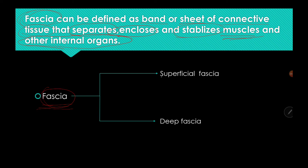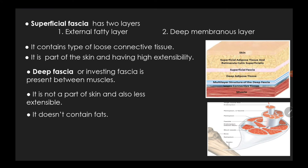For the fascia of the upper limb, the first type is superficial fascia, located on the superficial surface of the body, and the second is deep fascia, the deepest part of the body. Superficial fascia has two layers: the external fatty layer and the deep membranous layer. In this image, the superficial fascia shows the superficial adipose tissue and the reticular subcutaneous layer above, and the deep adipose tissue below.